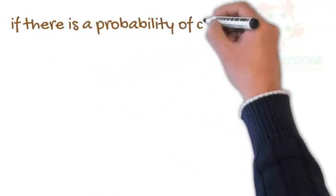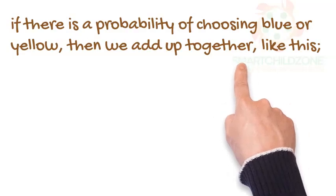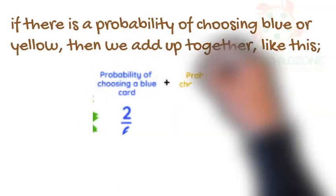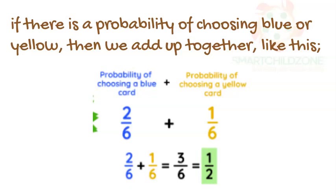If there is a probability of choosing blue or yellow, then we add up together like this. The probability of choosing a blue card is 2 out of 6 plus the probability of choosing a yellow card which is 1 out of 6. Therefore adding up gives you 3 over 6, and further division makes it 1 over 2.